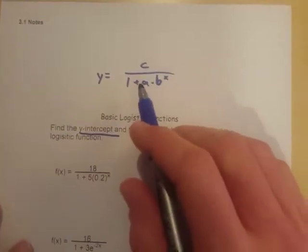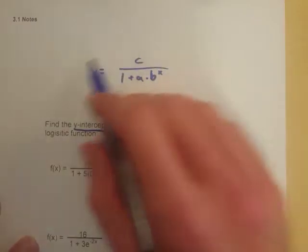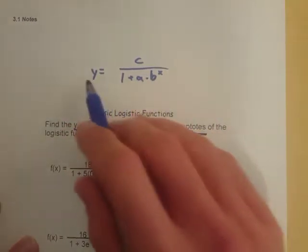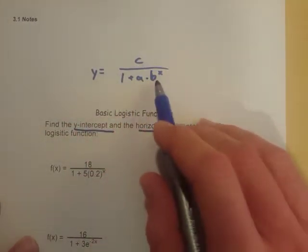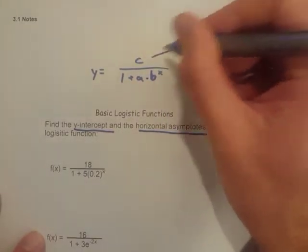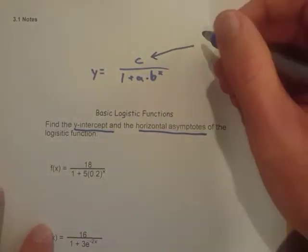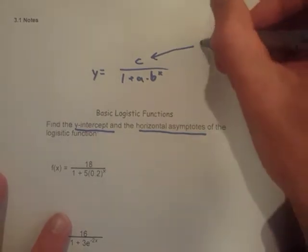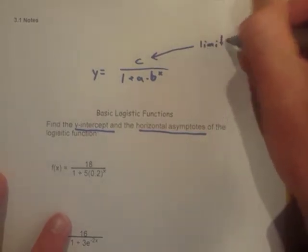One thing I want you to remember is that our basic function, for the most part, when we write it, it's going to be c over 1 plus a times b to the x. Something I want you to make note of is c, that's going to be an important value for us, that is called the limit to growth.